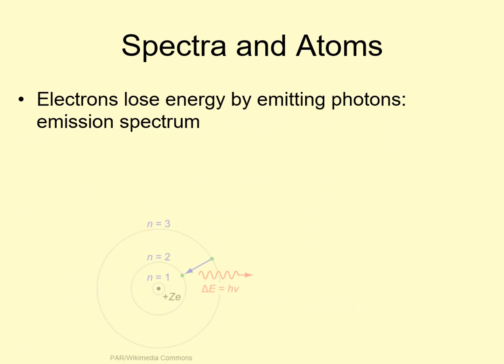Electrons gaining or losing bundles of energy causes them to jump to different orbitals. Photons are bundles of energy, so photons can make electrons change orbitals. When an electron drops to a lower energy level, it loses energy by emitting a photon. The energy of the photon has to match the energy the electron loses to go down a level. The energy of a photon is linked to its wavelength or color, so if you know the energy gap between electron levels, you know the color it can emit.